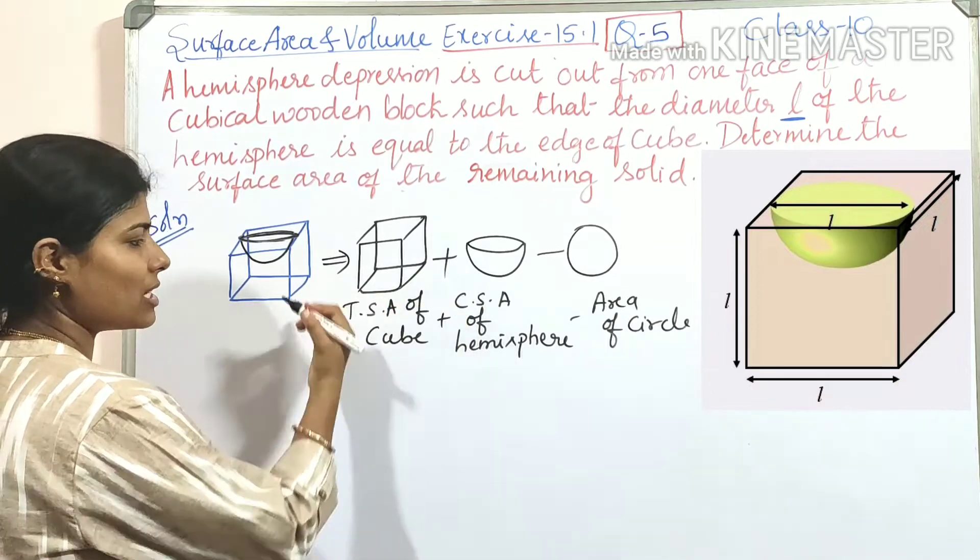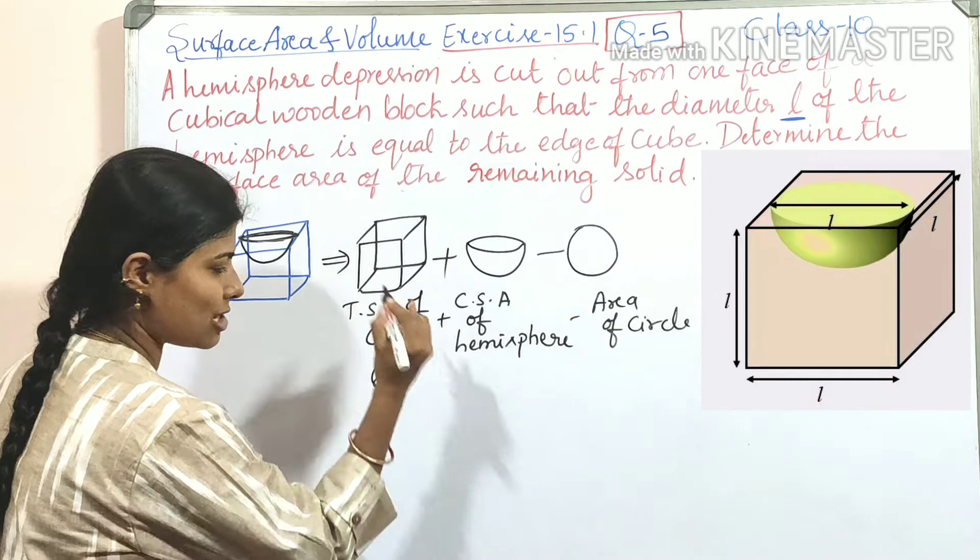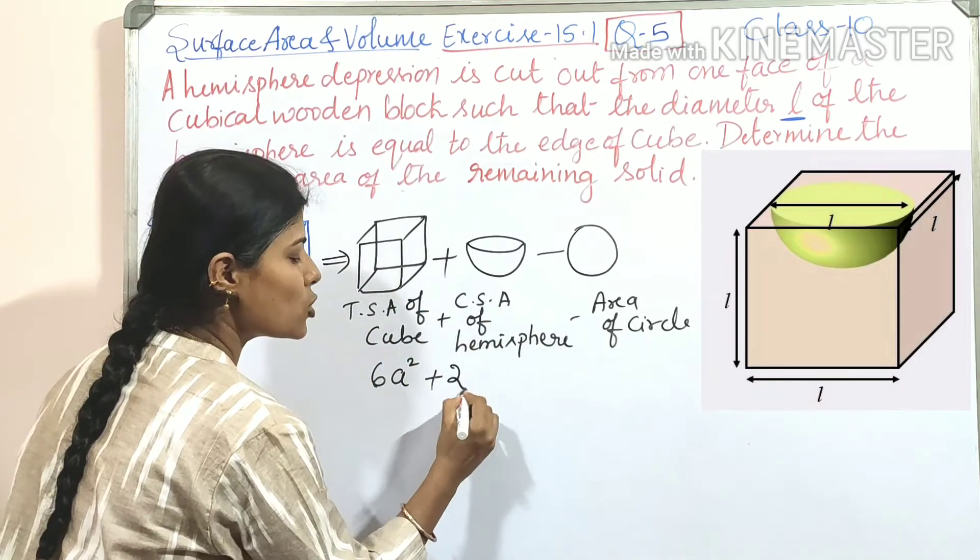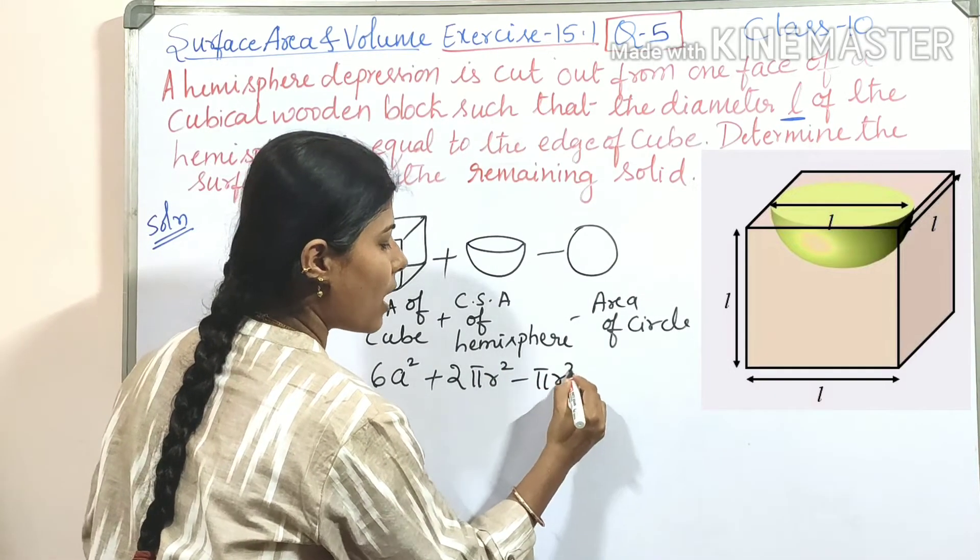So TSA of cube, if we consider TSA of cube, so its formula is 6A². Plus CSA of hemisphere is 2πR². Minus πR².